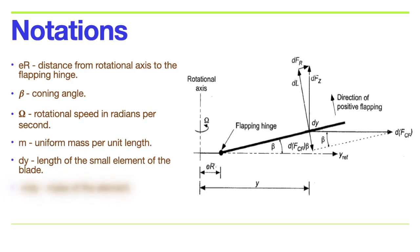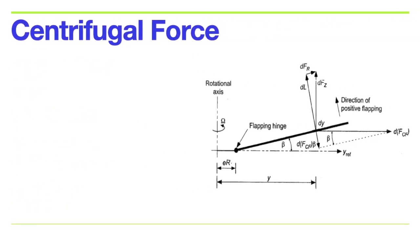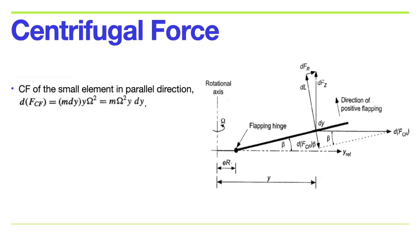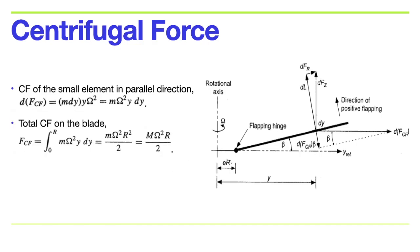The mass of this element is m dy, and the centrifugal force is F_cf. The contribution of this small element of length dy to the centrifugal force acting in a direction parallel to the plane of rotation is dF_cf, that is dF_cf = m dy × y × omega². So dF_cf = m omega² y dy. The total centrifugal force acting on the blade is the integral of dF_cf from 0 to R, giving m omega² R²/2, which equals (uppercase M × omega² × R) / 2.